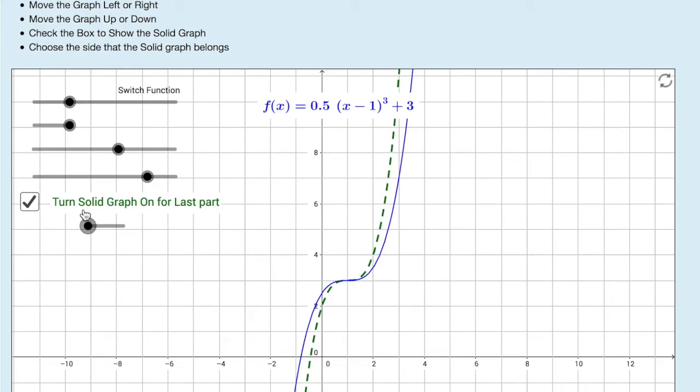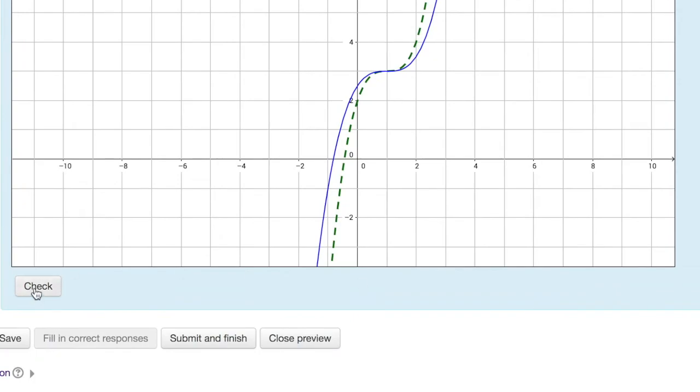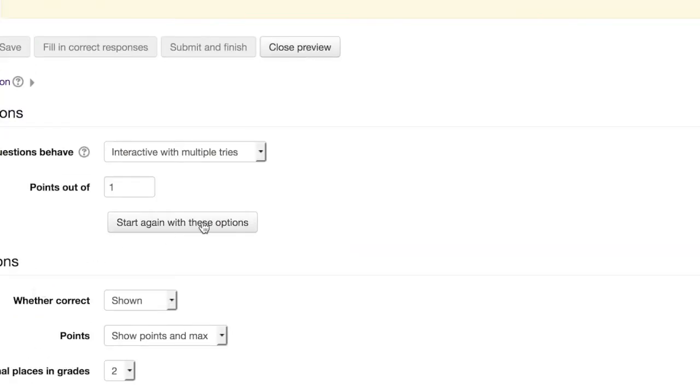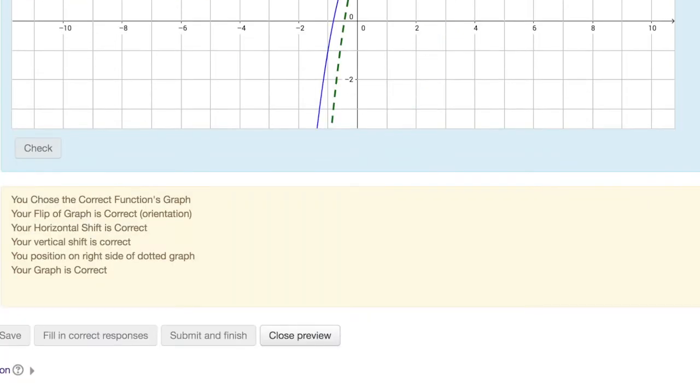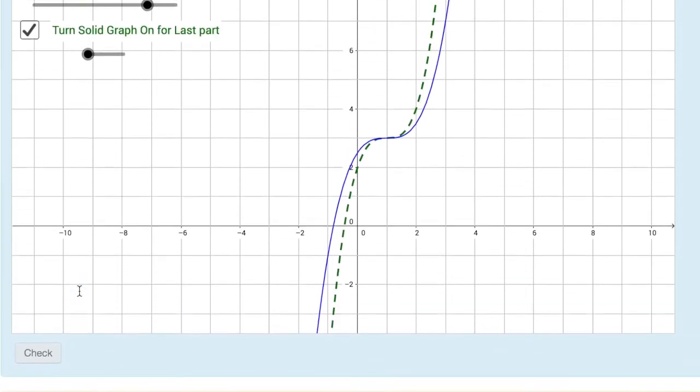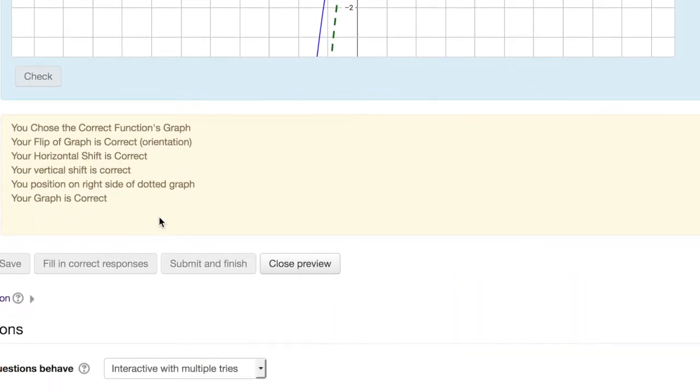These aren't perfect graphs. The number in front is going to change, but you only get the two choices, inside or outside. When you get down here to check, it will tell you if you did each one of the pieces correct. So you chose the right graph. You flipped it right. You horizontal and vertical shifted correctly. You positioned on the right side of the dotted line. Did you put it closer to the horizontal, closer to the vertical? And if your graph is correct. So it checks all of these as logical arguments. If something's missing, you can just do it again.